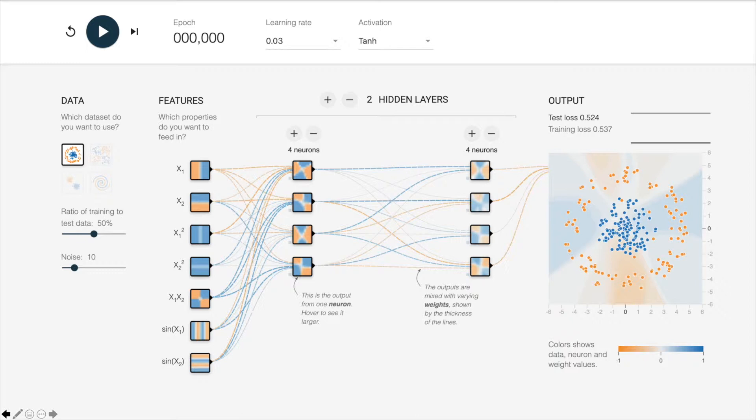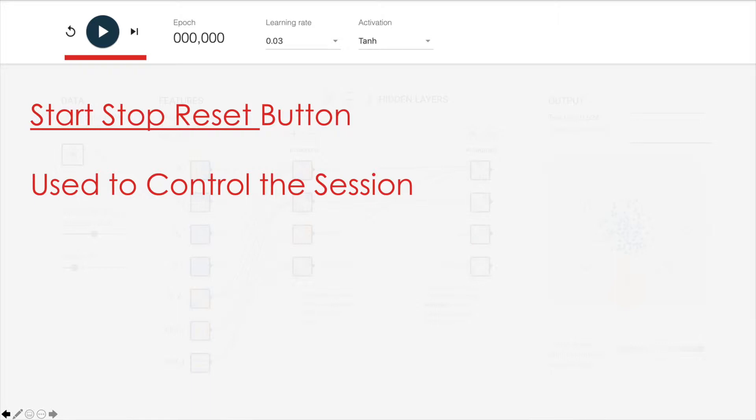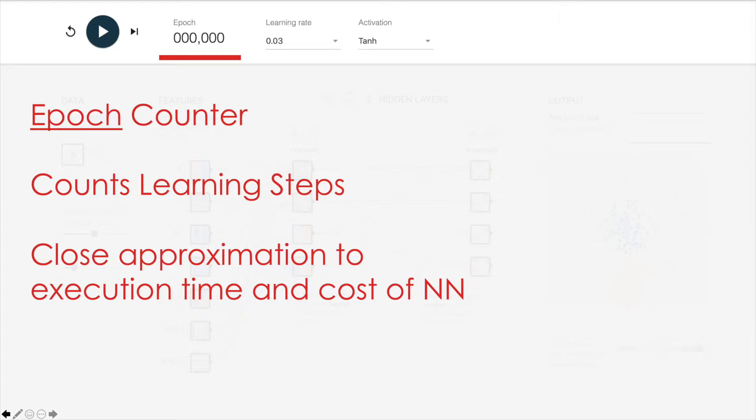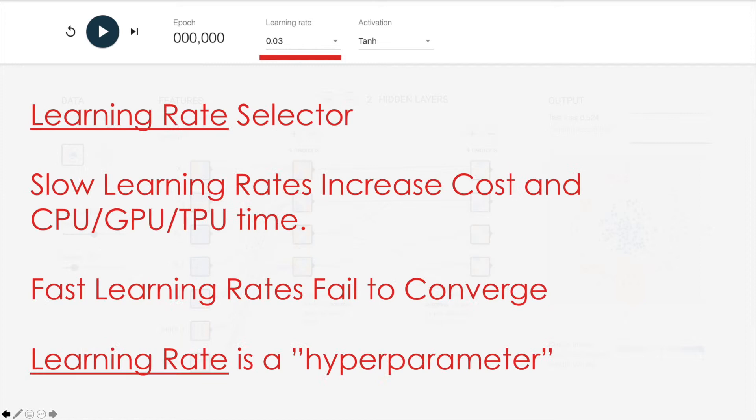So let's do an example with the TensorFlow Playground. Before we run the playground, let's learn what the controls are quickly. You have a stop, start, reset button like you would see on a VCR, and it controls the session. You have the epoch counter, which tells you how many epochs or learning steps you are into the solution. It's a close approximation to execution time and the cost of running the neural network. The learning rate is how fast we allow the system to learn with each step. Slow learning rates increase the cost of training. Fast learning rates can often fail to converge.